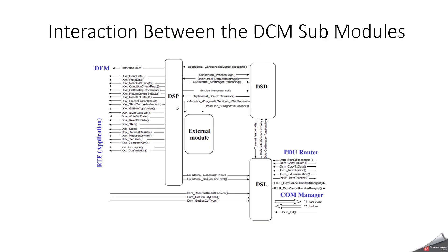Looking at the interaction between DSL, DSD, and DSP: DSL is the first module hit in DCM. From the PDU router, the message first goes to DSL, where it handles transport and protocol management. Specifically, DSL will validate the protocol format, handle segmentation and reassembly of UDS messages, manage P2 and extended P2 timing for responses, and convert incoming PDUs into diagnostic requests before passing them to DSD. DSL acts like a transport manager that prepares data to be processed at the diagnostic service level.